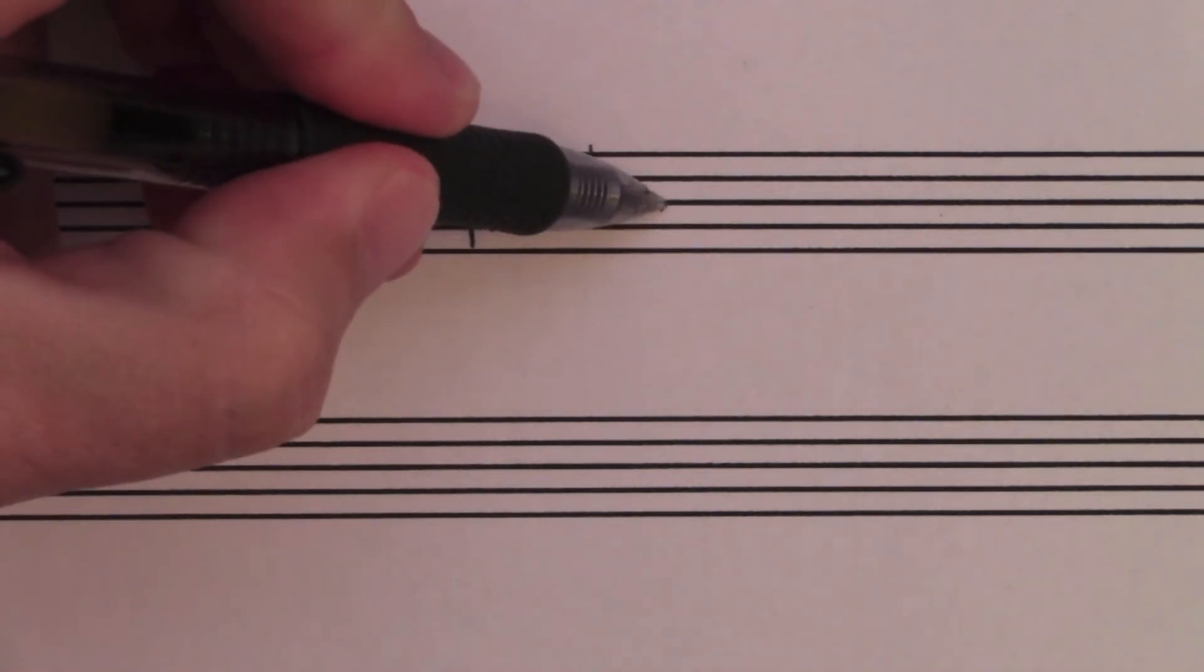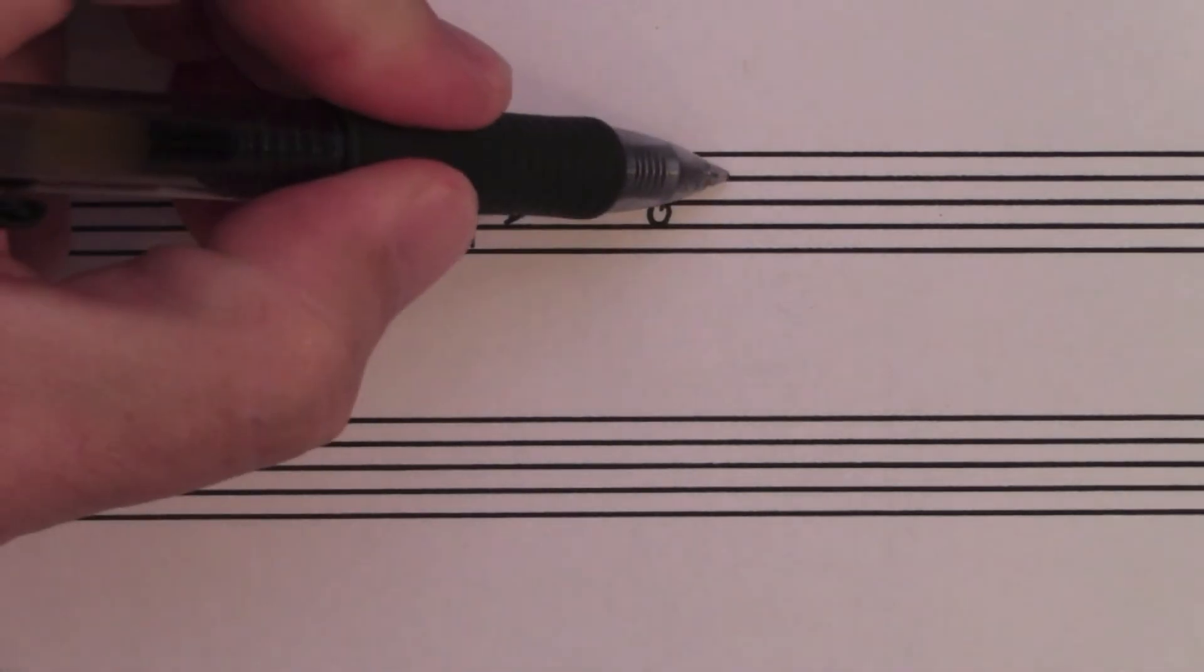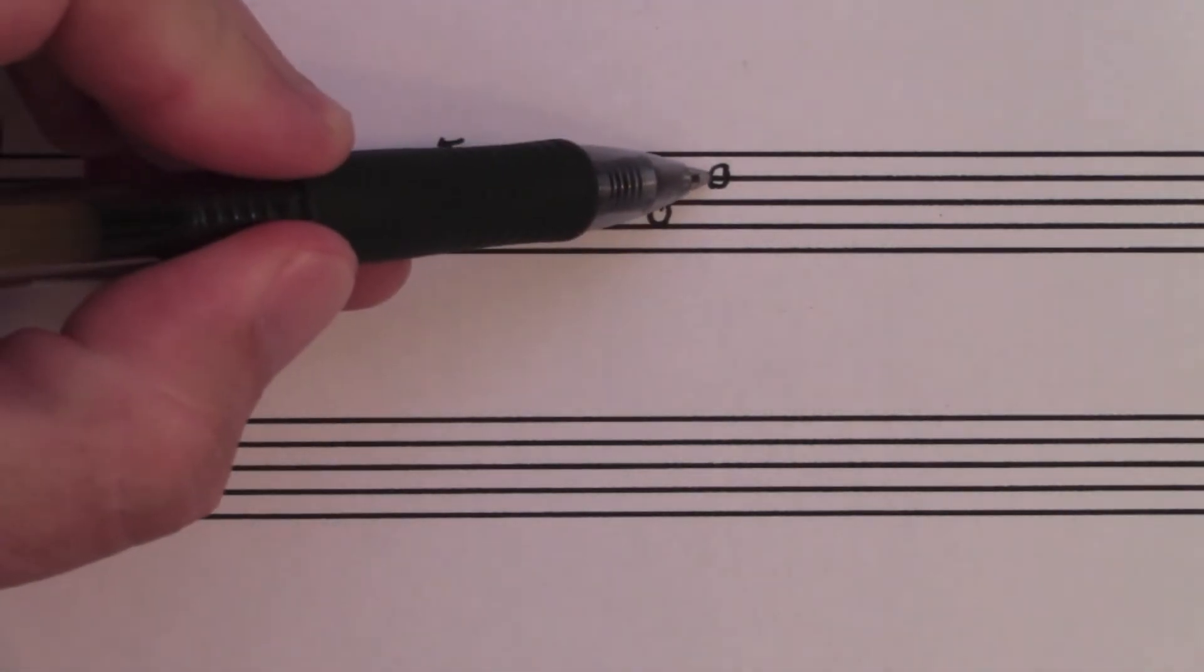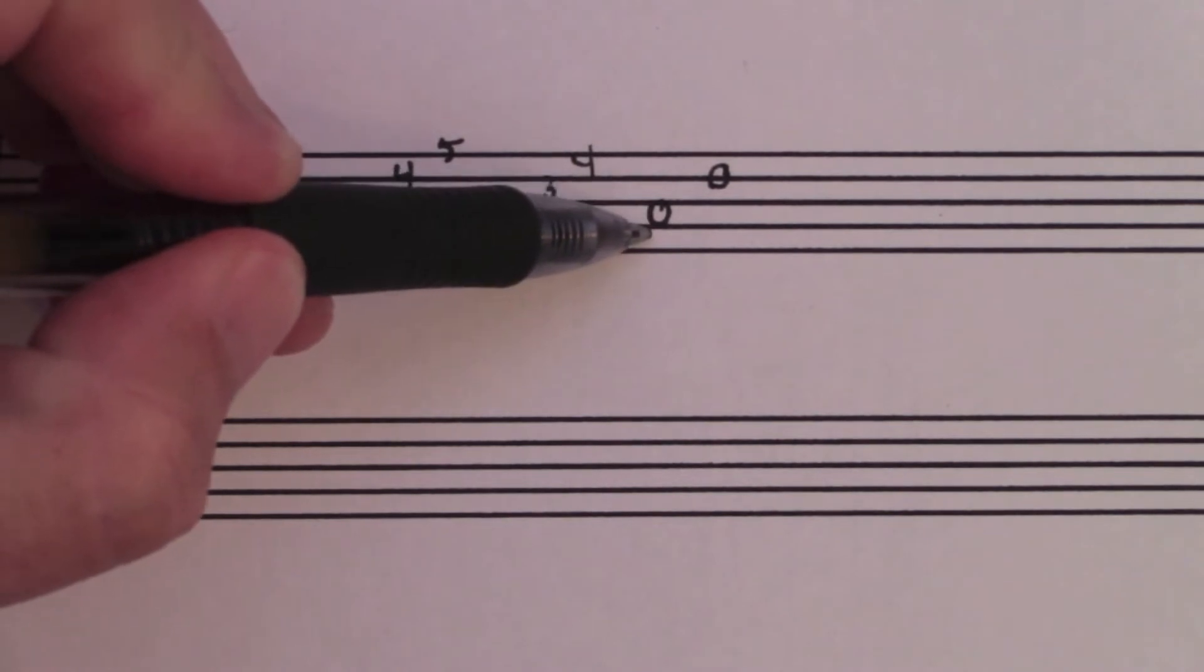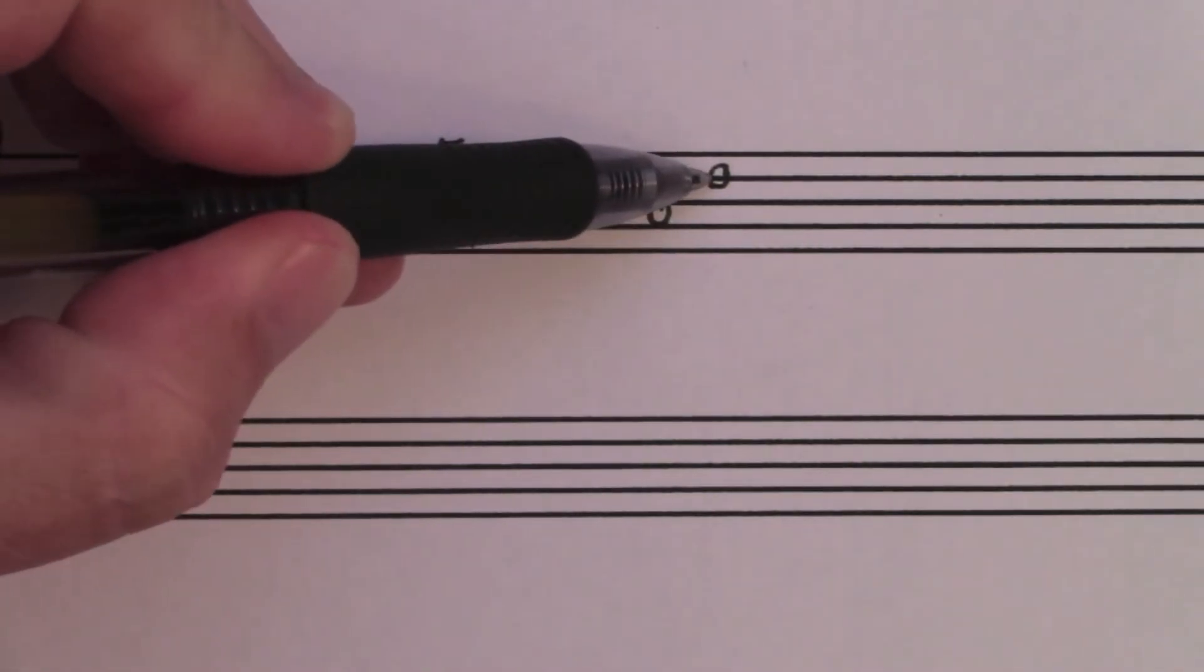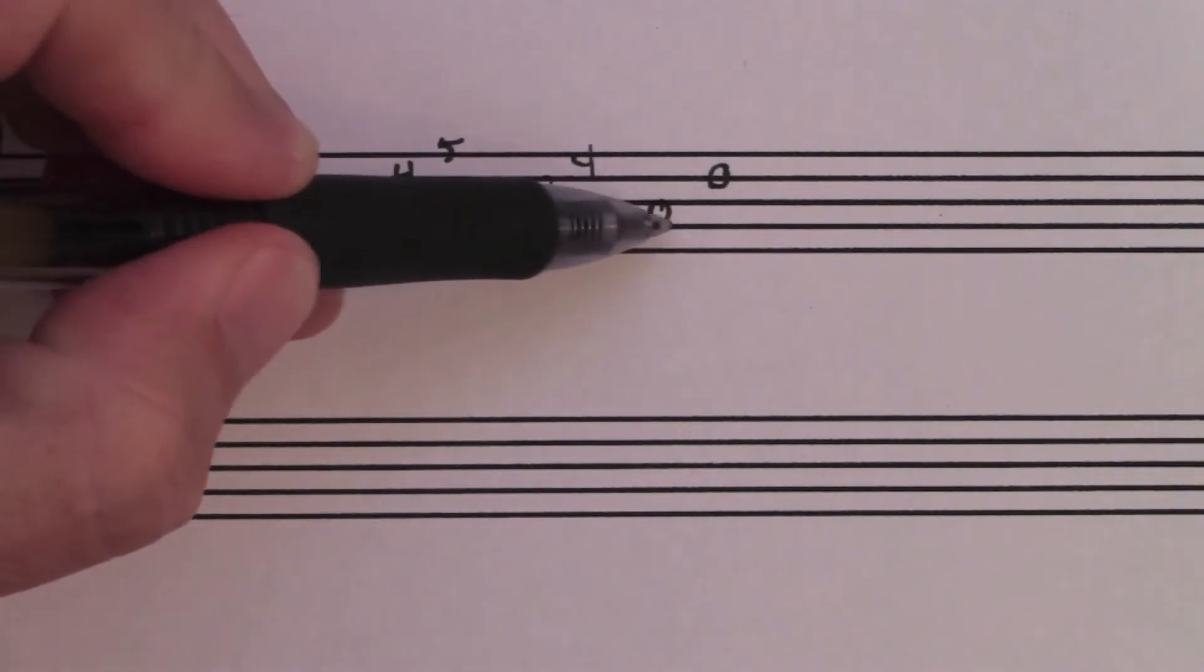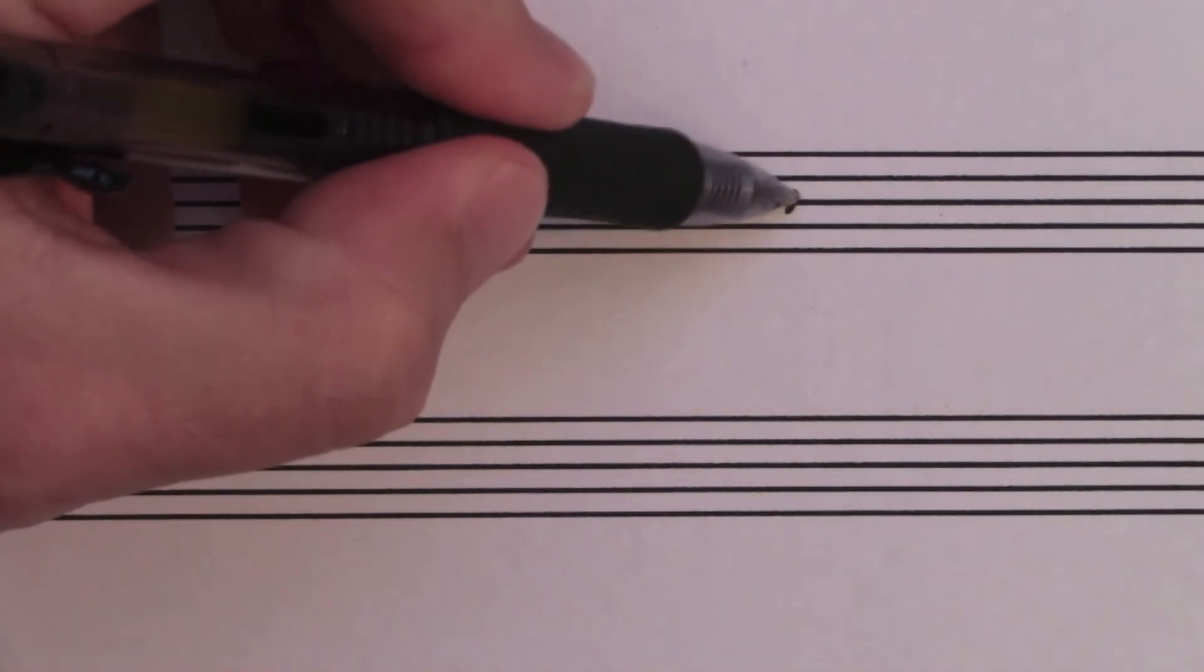So a note could be a space note, like that, or it could be a line note. It's whatever runs through the middle of the note, so this is not a line note because it sits on a line. Some students think that. No, this is a line note because a line goes through the middle of the note. This is a space note because a space goes through the middle.